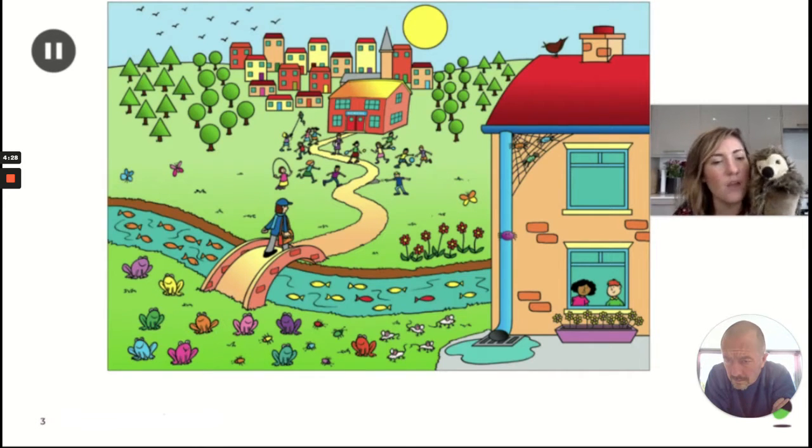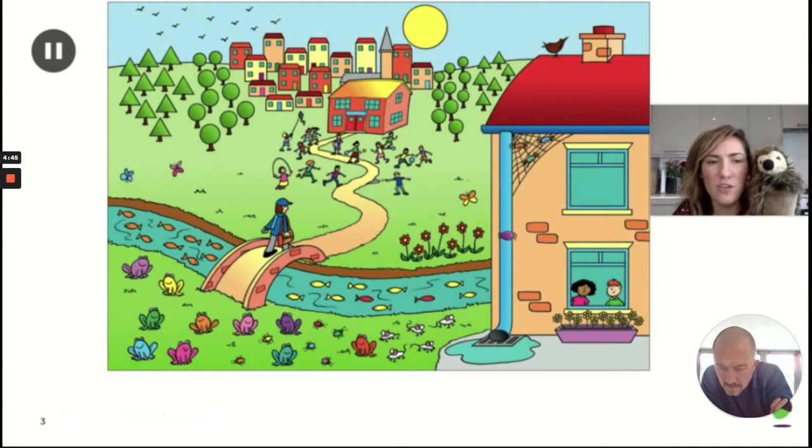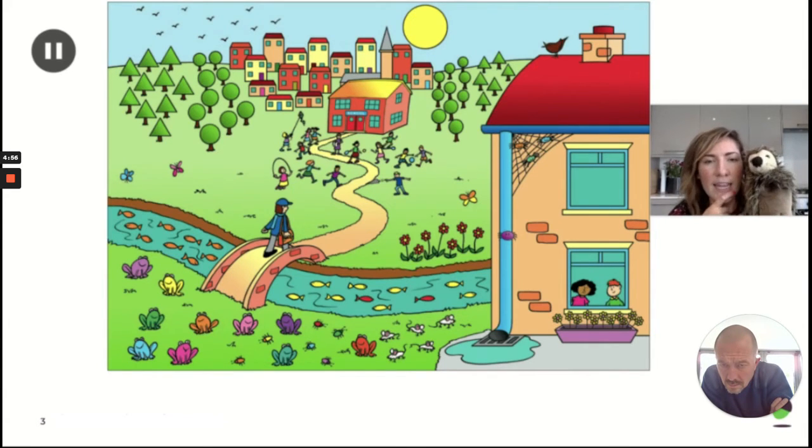All right. Let me see what else we can do here. Let's keep looking at those frogs. All right. Which colour frog is behind the green frog? Which coloured frog is behind the green frog? Now, there might be more than one answer here. Have a look. Well, if you said the yellow frog or the purple frog, you're right, because both of them are behind the green frog.